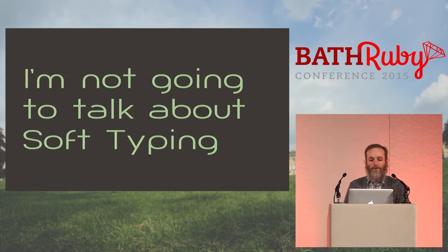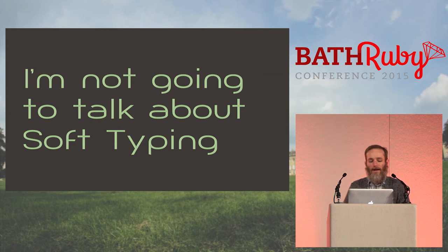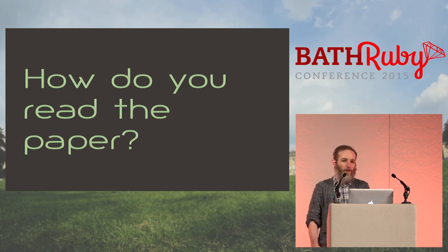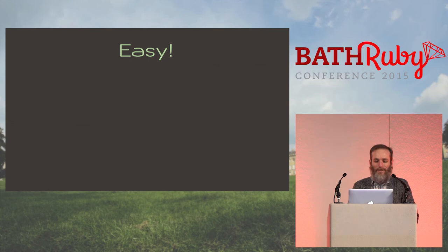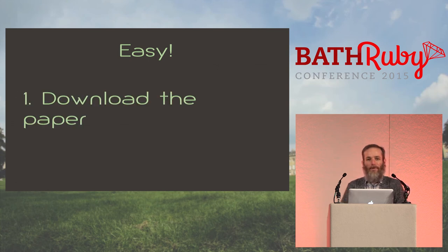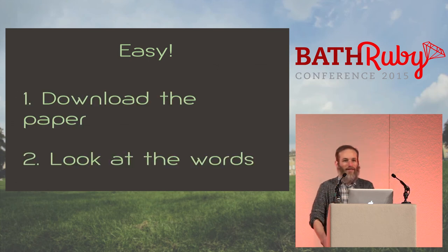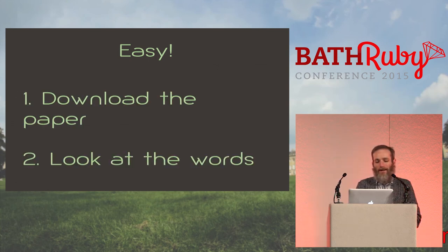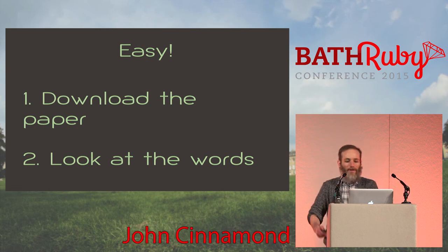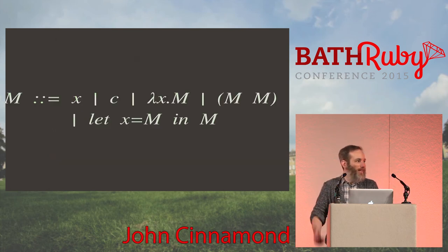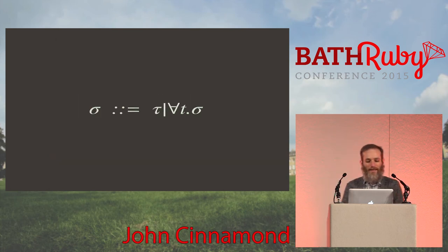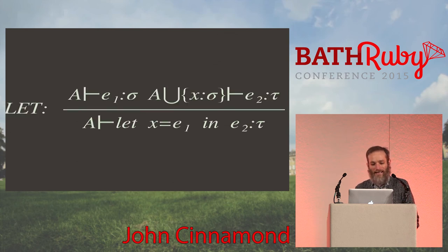You might think reading a paper is easy — you download it and look at the words. But when you start, it's fine, and then you start finding things like complex notation, and it just gets worse and worse. After a while you realize you're looking at stuff with no idea what's going on. So what are your options? You could just give up — 'this is too hard,' or 'this is computer science, it's not for me, I'm a Ruby developer.' That's perfectly valid.